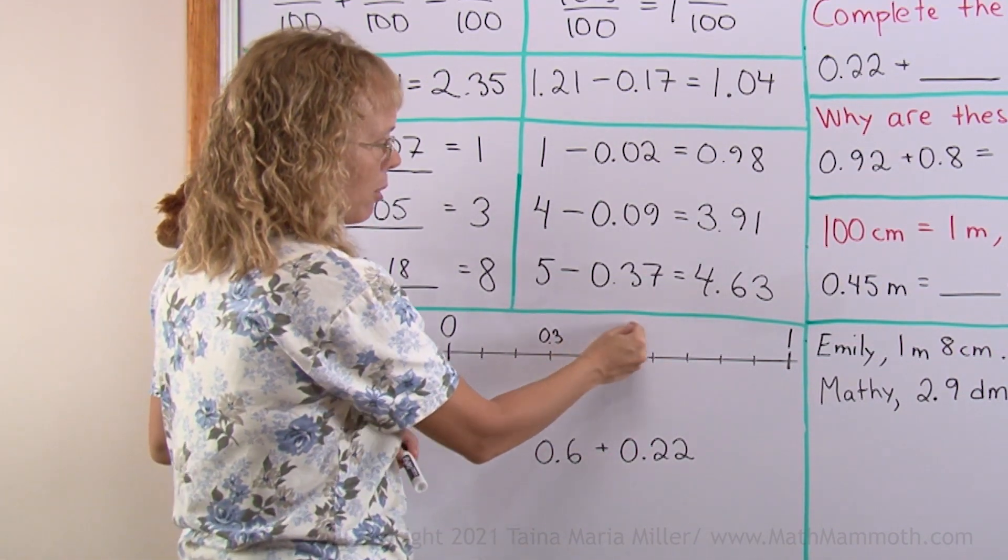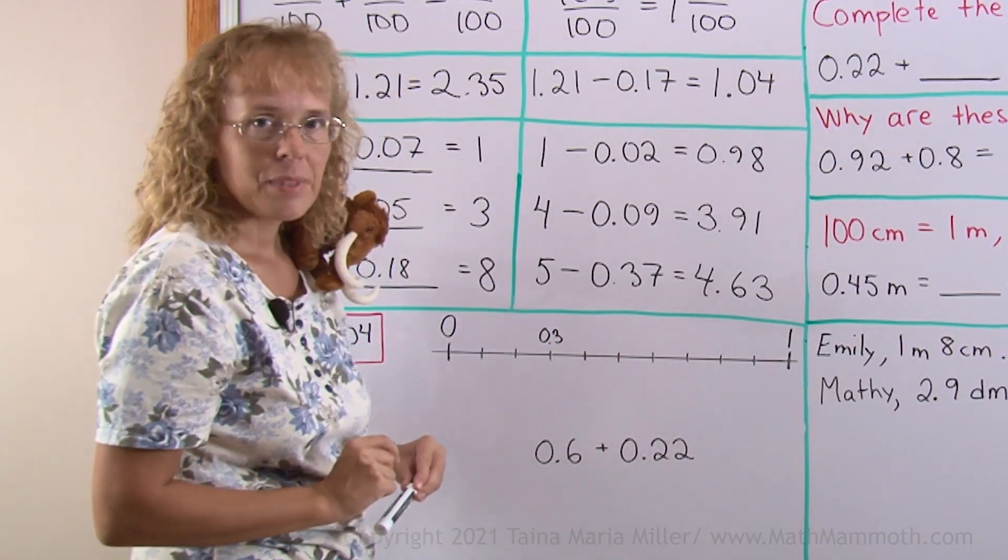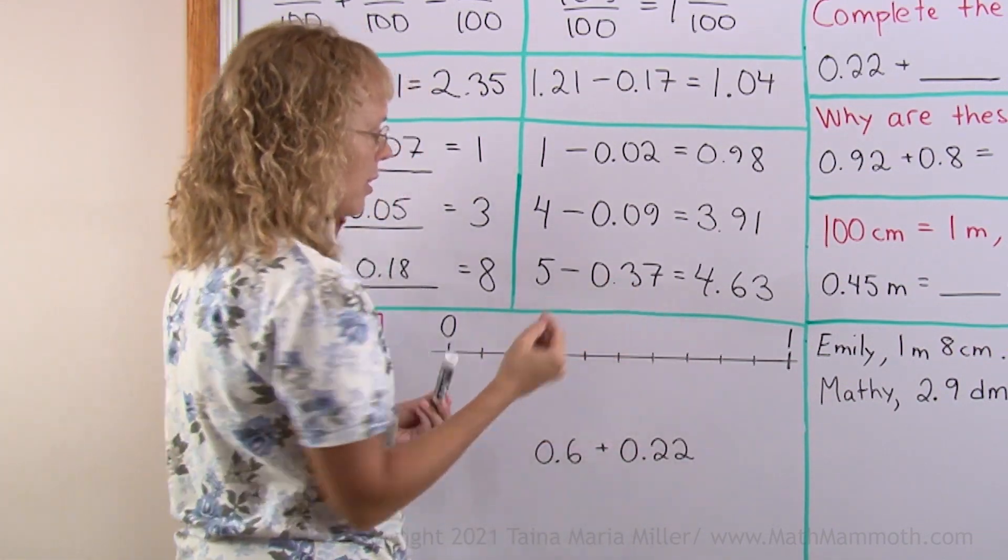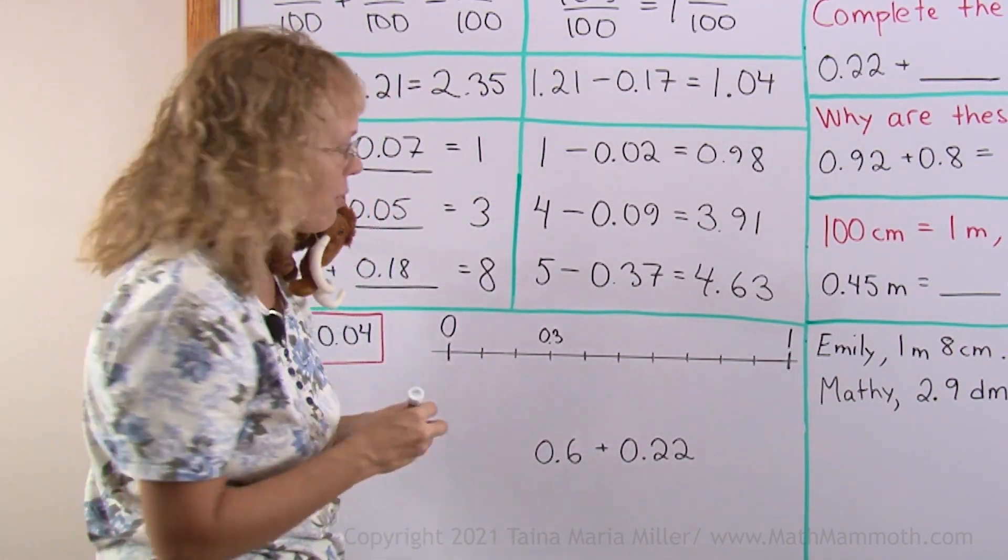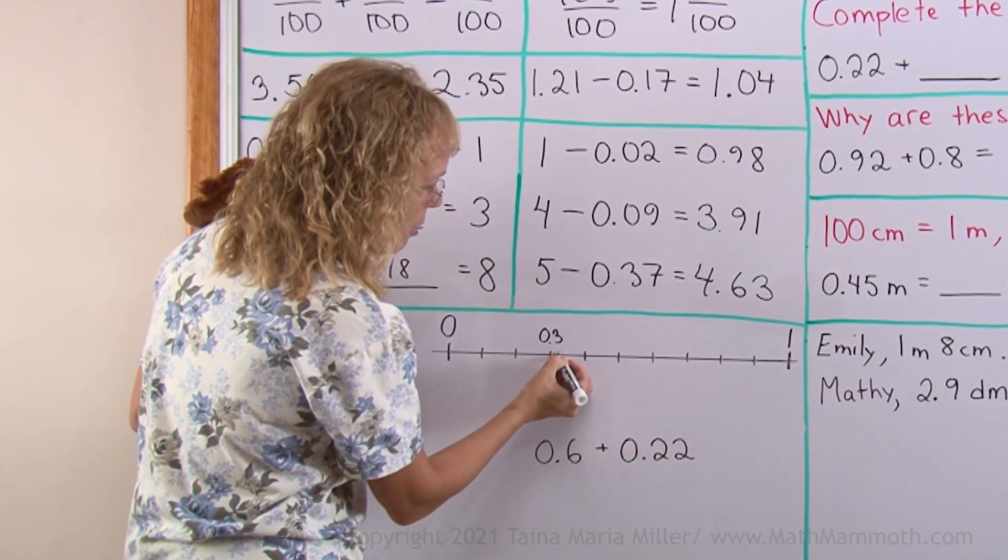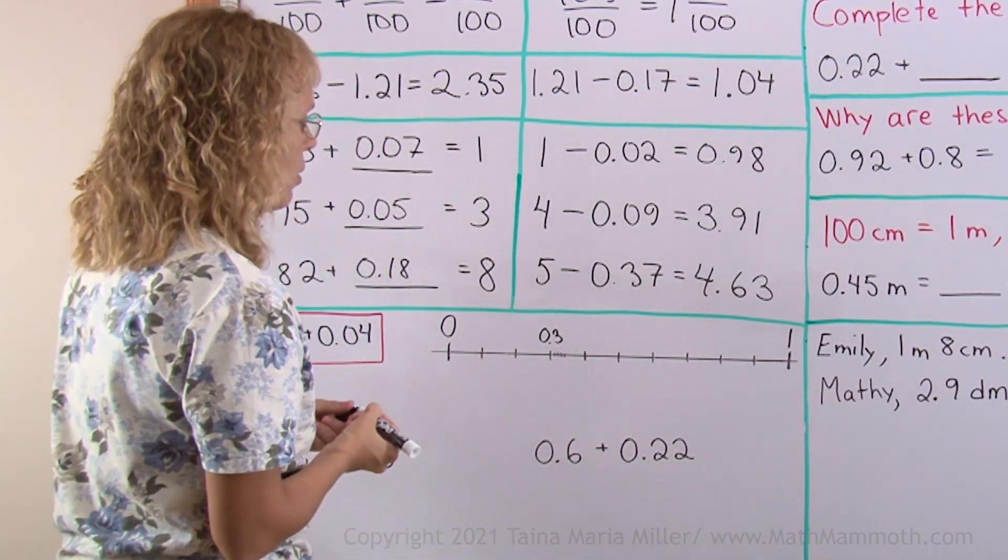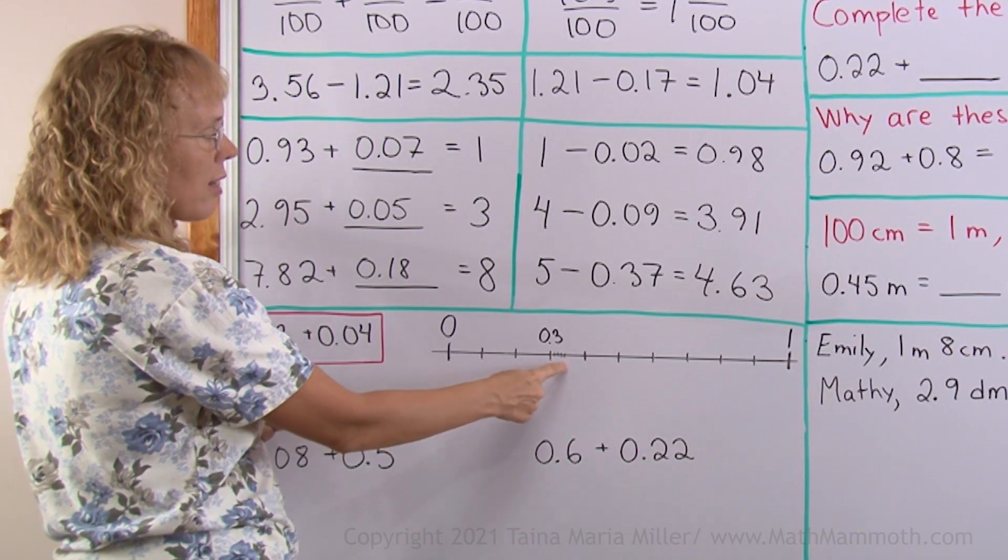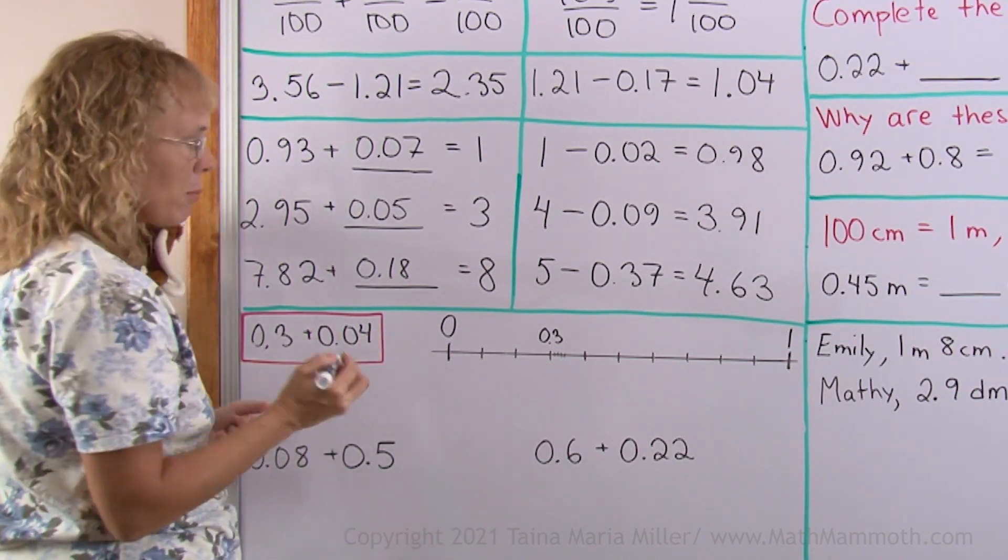Does that mean that we jump all the way here? But see, these jumps would be tenths, we're just going to jump 4 hundredths further, for those little marks, remember? Okay, so we get 3 tenths and 4 hundredths, the answer will be 0.34.